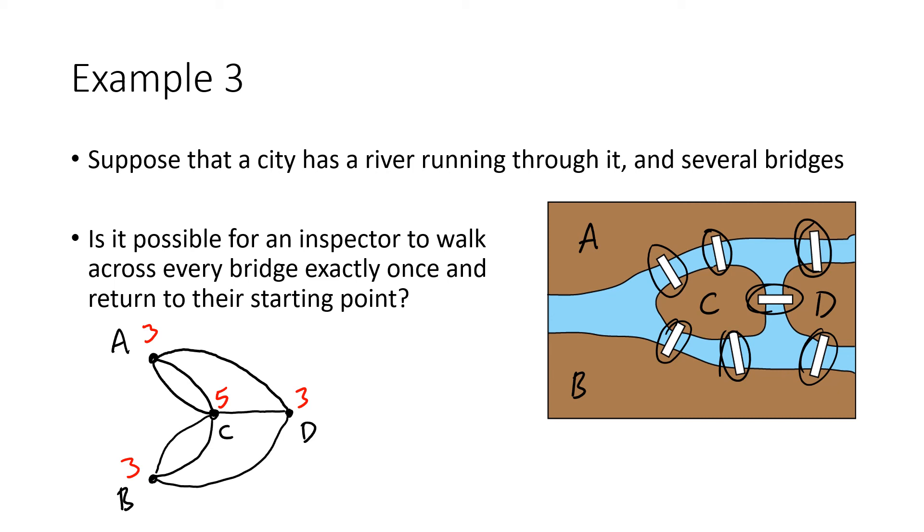So again, we see that, in fact, none of these vertices have an even degree, but we only need one odd degree to be able to draw our conclusion from Euler's theorem. So since vertex A has degree equal to three, which is odd, this graph does not have an Euler circuit. And that means that our bridge inspector cannot find a way to go through these bridges, return to their starting point without retracing their steps.